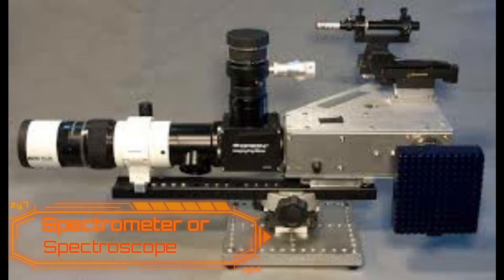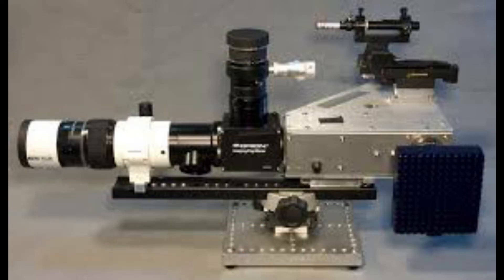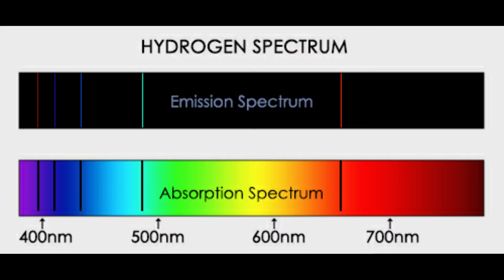Spectrometers are instruments which spread light out into its wavelengths, which create a spectrum. And within this spectrum, astronomers can study both emission and absorption lines, which are the fingerprints of atoms and molecules.